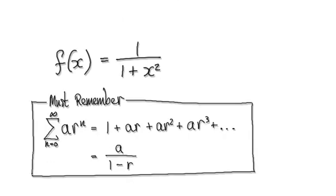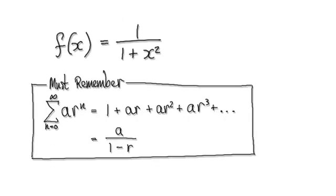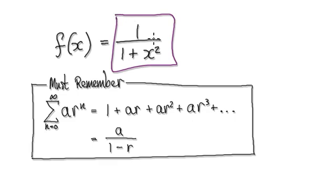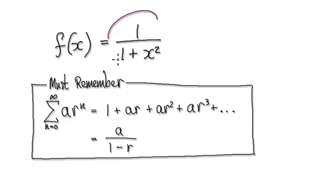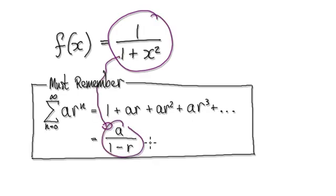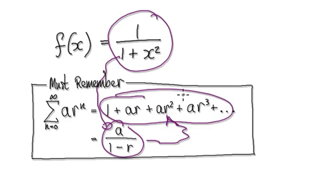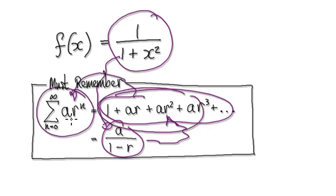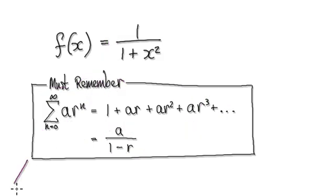Let's give you guys some practice. Find the power series representation of this function, and then also find the interval of convergence. Start from here, rewrite it in this form, and then work backwards to get into this form. Once you're in this form, translate it. It is this that you're seeking. Remember to find the interval of convergence. Press pause and have a go.